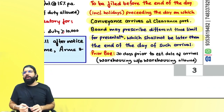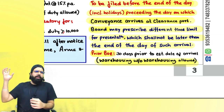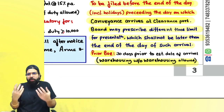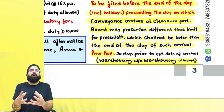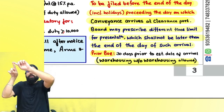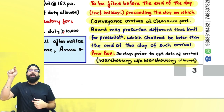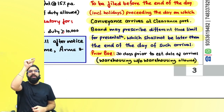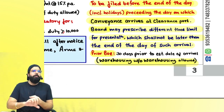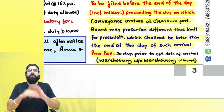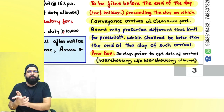A prior bill of entry is also allowed 30 days prior to the expected date of arrival. Warehousing without warehousing is also allowed: if your goods have come to the port and you cannot clear them because you lack a document like a bill of lading, you can request the officer to shift goods from the port to the warehouse without the warehousing provisions being applicable on you — that is the concept of warehousing without warehousing.